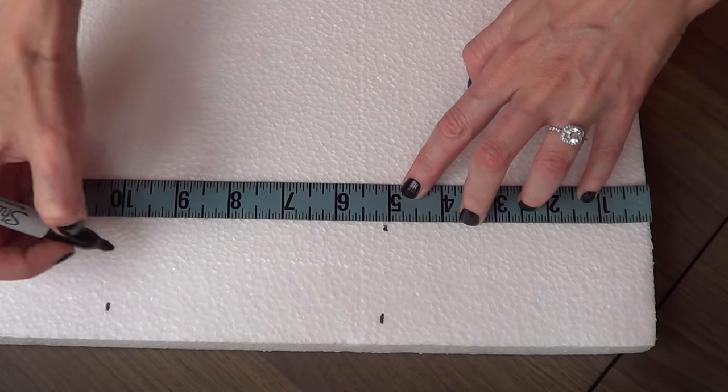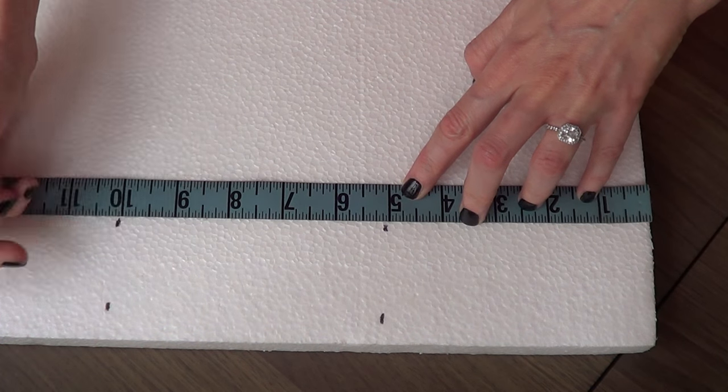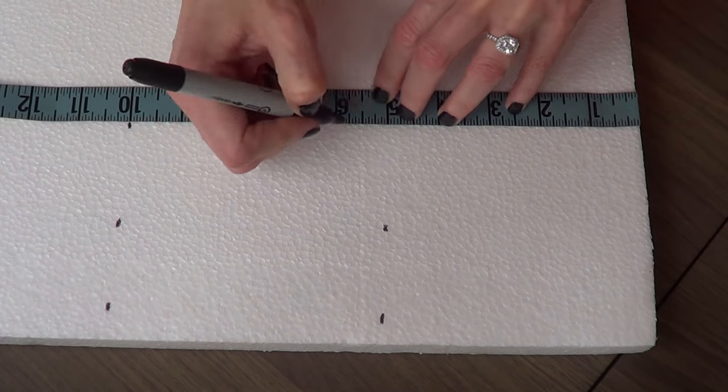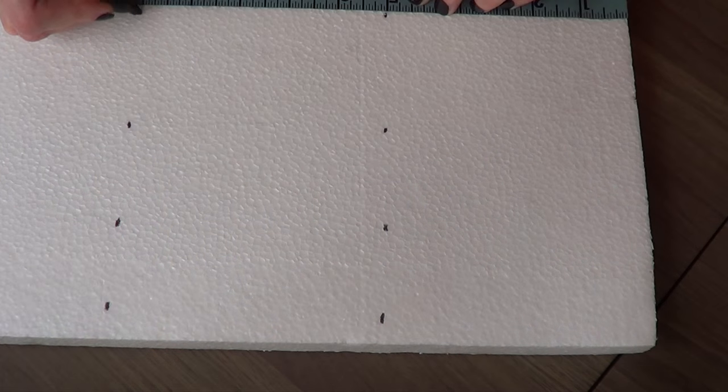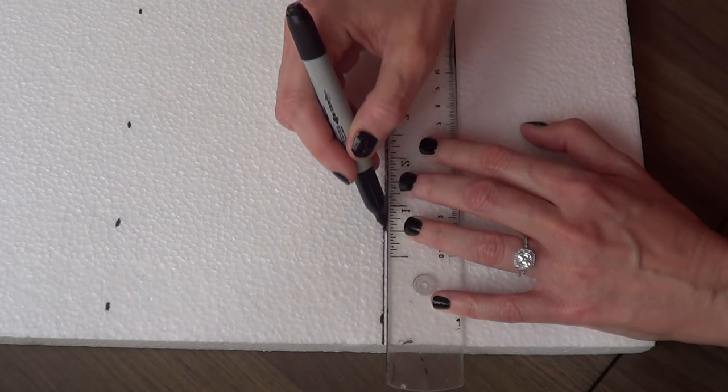I'm just going to go all the way from one end to the other, marking five inches if that makes any sense. Then I'm just going to gather my marks together so I can have two rectangles to cut.